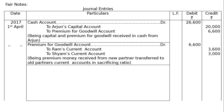Next journal entry: Premium for goodwill account debited Rs. 6,600; to Ram's current account Rs. 3,600, to Siam's current account Rs. 3,000. Being premium for goodwill distributed to sacrificing partners in their sacrificing ratio.